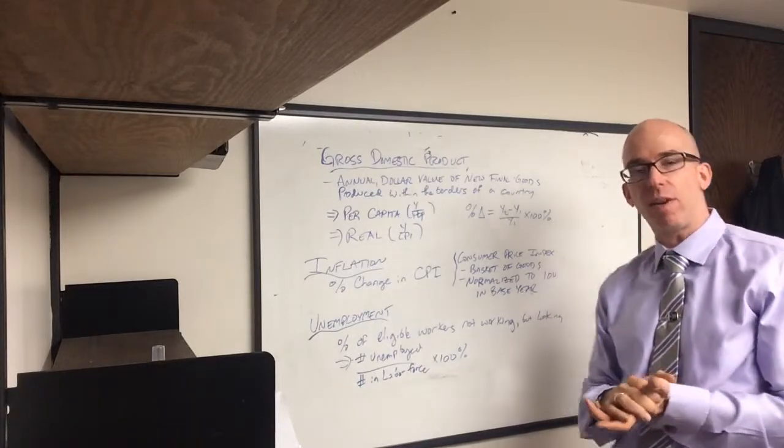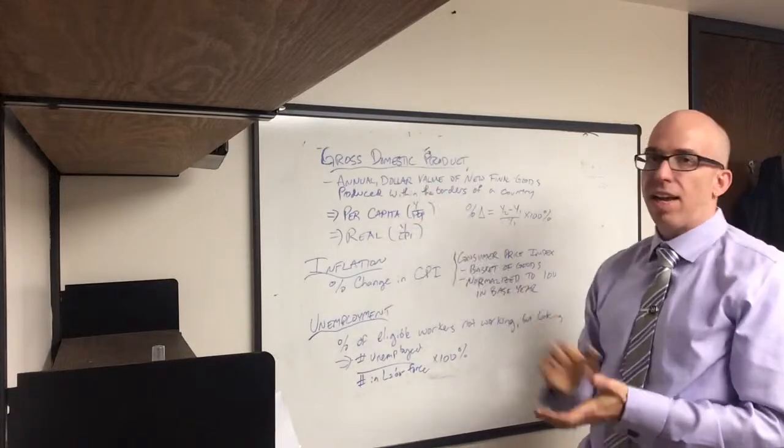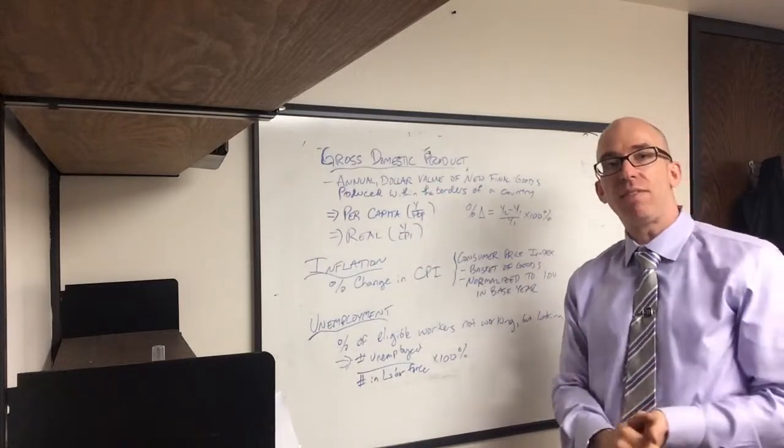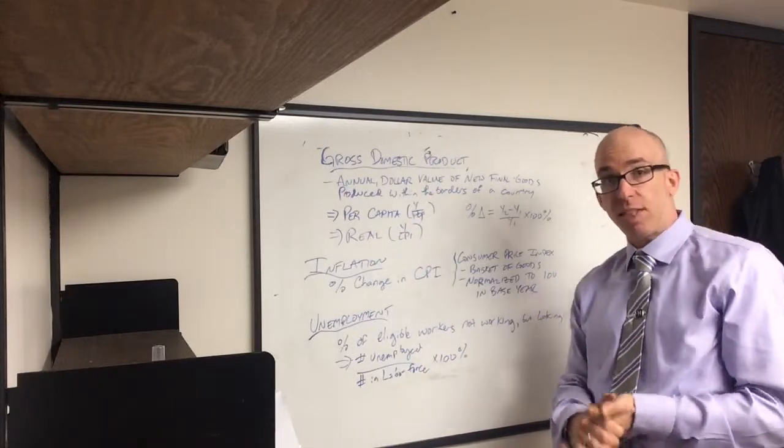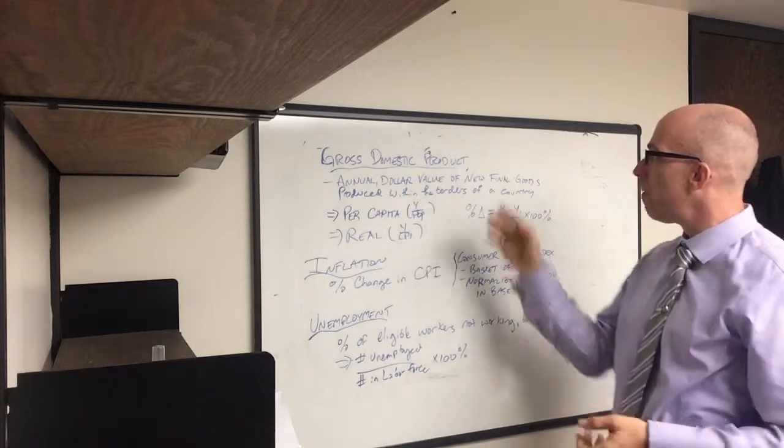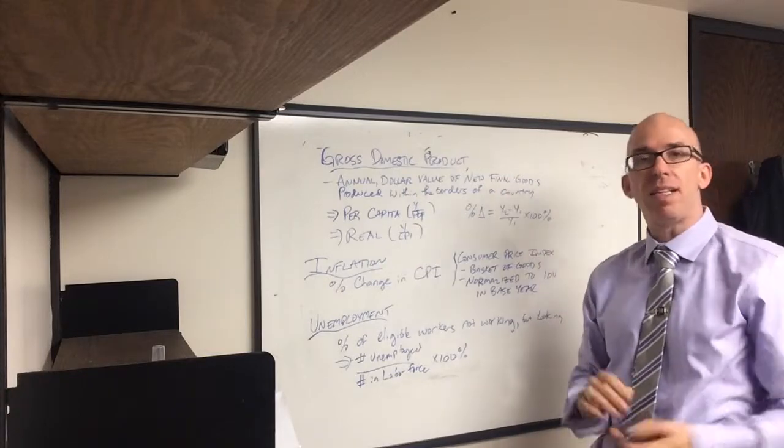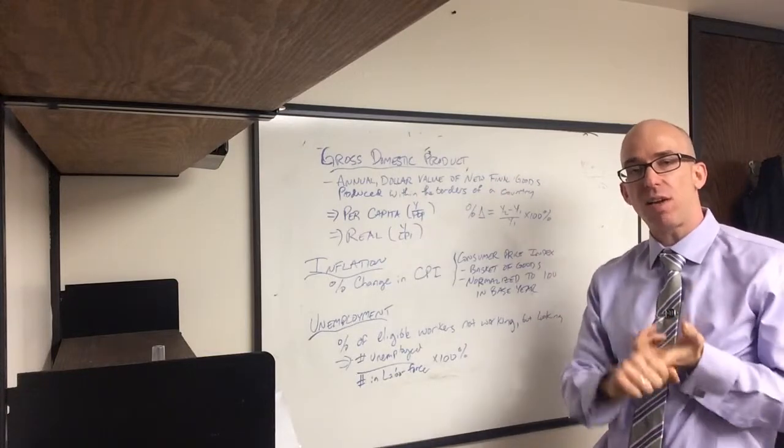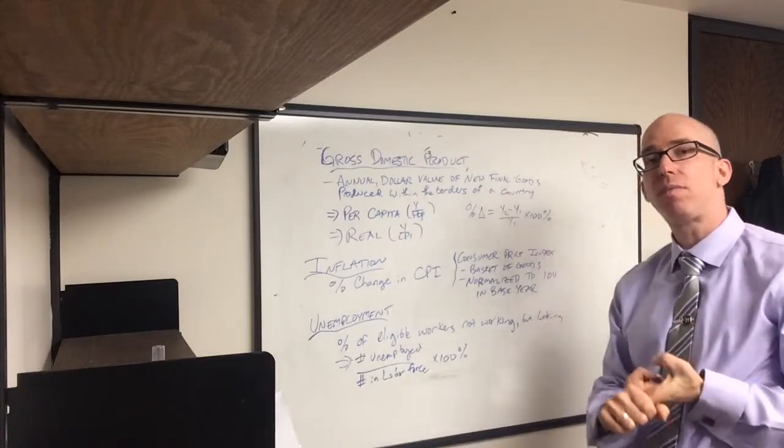So it's yearly, meaning it's a flow variable. It's dollar value, so it can be measured in U.S. dollars even for countries that don't use the dollar. It can be converted into dollars or done in the currency of the country that's reporting it. It's new final goods. That means that it doesn't double count. It doesn't count used products and it doesn't count intermediate goods.